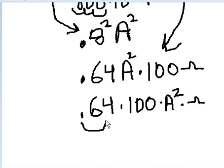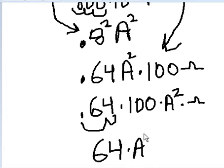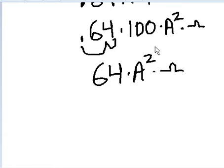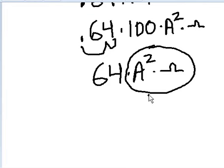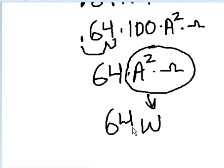Amps squared times ohms equals watts. So we have 64 watts. The power that is dissipated over this resistor of 100 ohms is 64 watts. Wow, that's amazing.